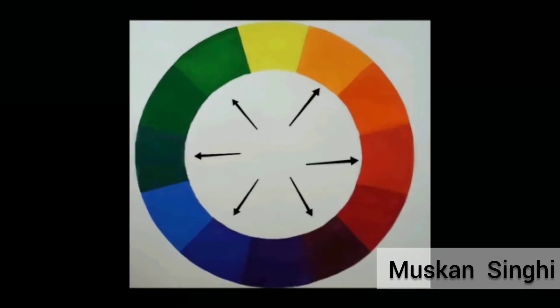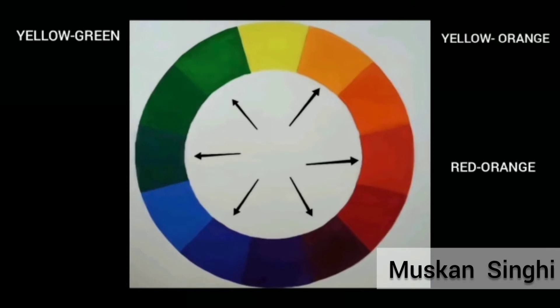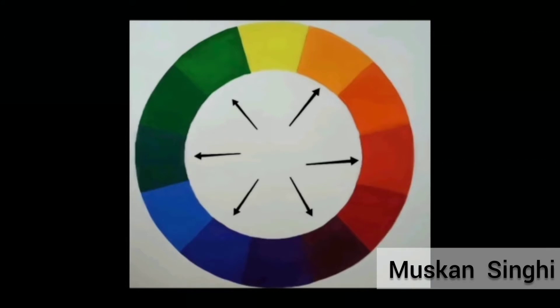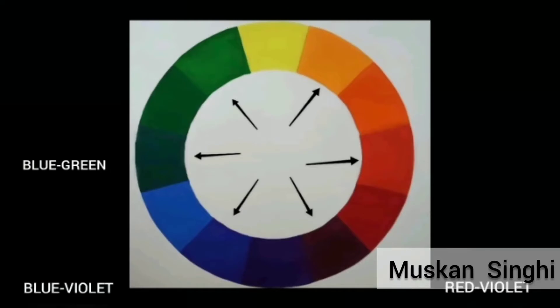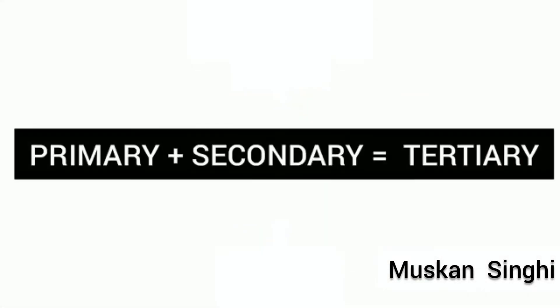The six tertiary colors are red-orange, yellow-orange, yellow-green, blue-green, blue-violet, and red-violet, which are formed by mixing a primary with a secondary color.